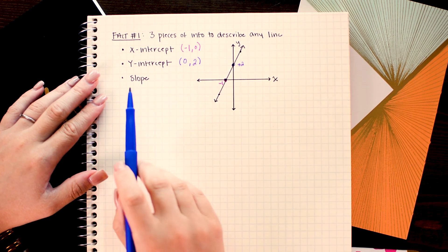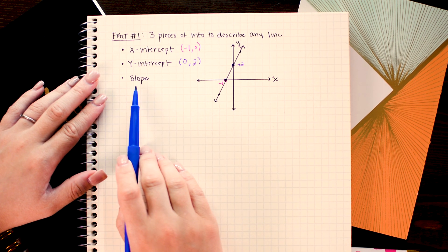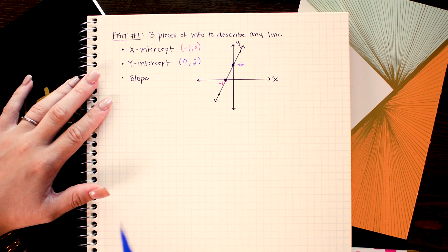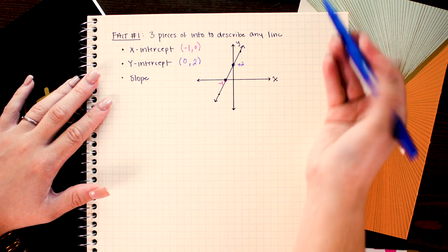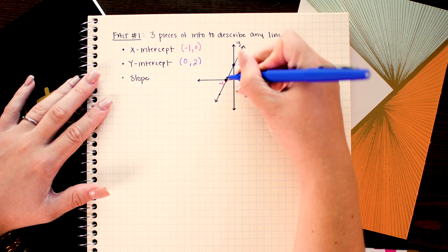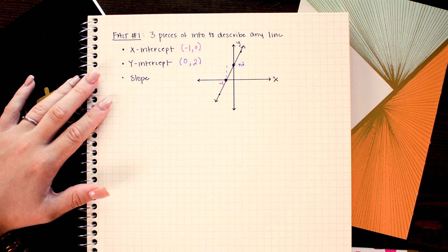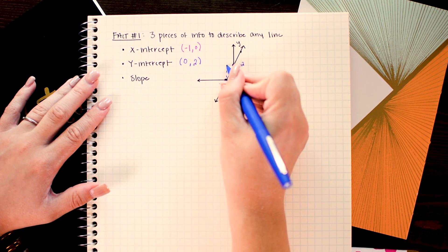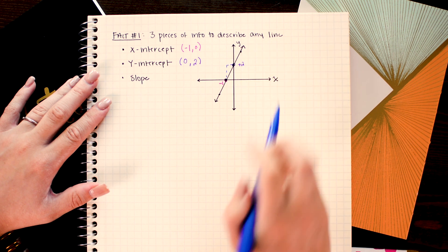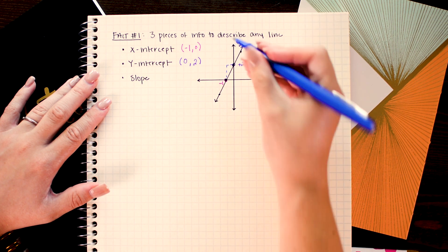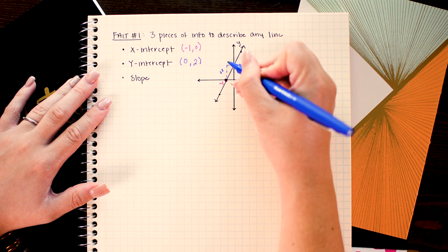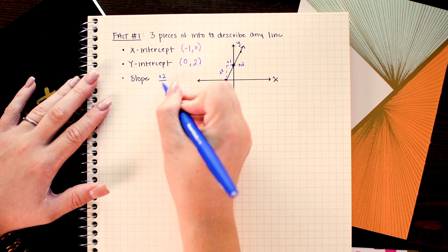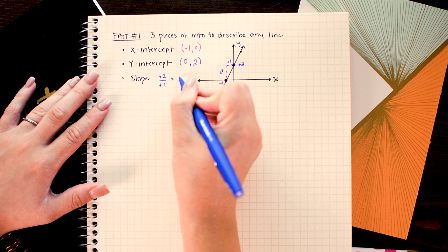The third piece of information that's important to know is the slope and we could count that by connecting any two points. Remember slope is rise over run. So I'm simply going to go up. Looks like two units for this problem. And in the positive x direction one unit. So that is two up and one over. So our slope is positive 2 over positive 1 which equals 2.